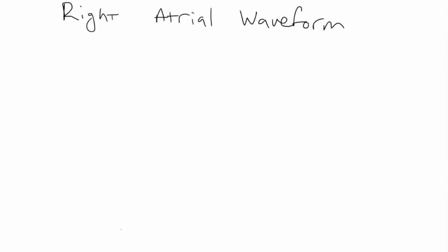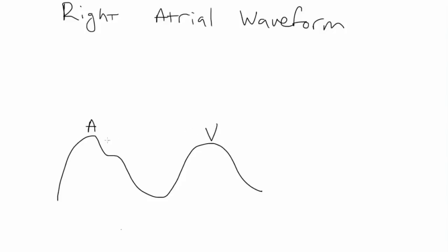When we talk about the right atrial waveform, it's very similar to the jugular venous waveform. There are two parts for each cardiac cycle: the A wave, the V wave, the X descent, the Y descent, and the C wave.